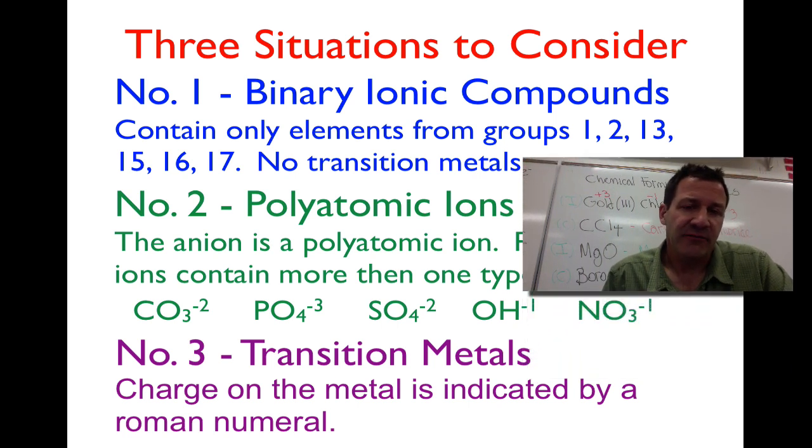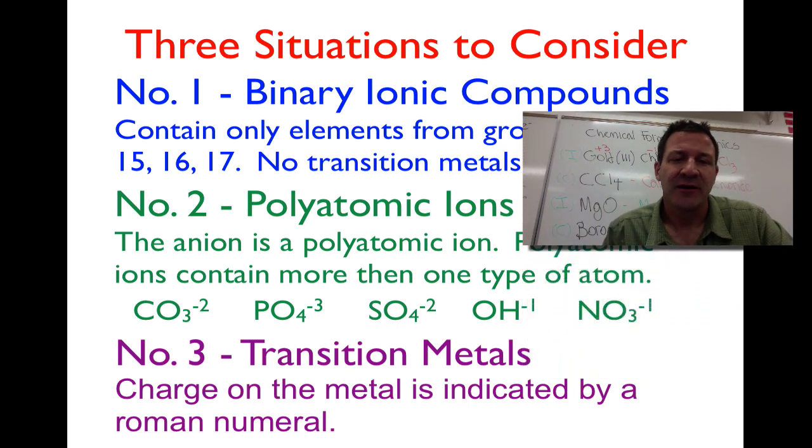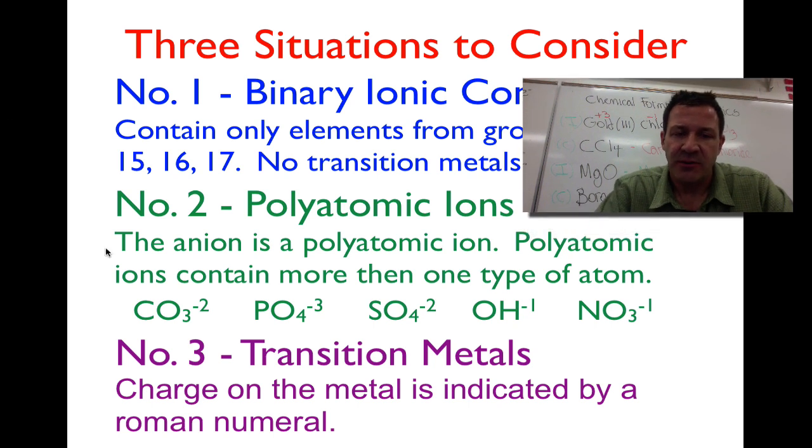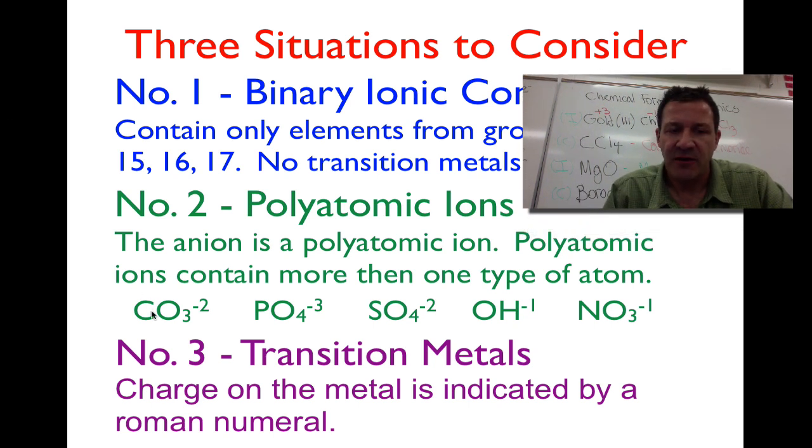For the polyatomic ions, we have a polyatomic ion as our anion, then we have to make sure we know what the polyatomics are. I wrote some of them down here, the common ones: carbonate, phosphate, sulfate, hydroxide, and nitrate. The charge, negative 2 for the carbonate for example, is the charge on the entire ionic unit. It's not the charge on one of the individual atoms, and you have to treat it as a single unit.